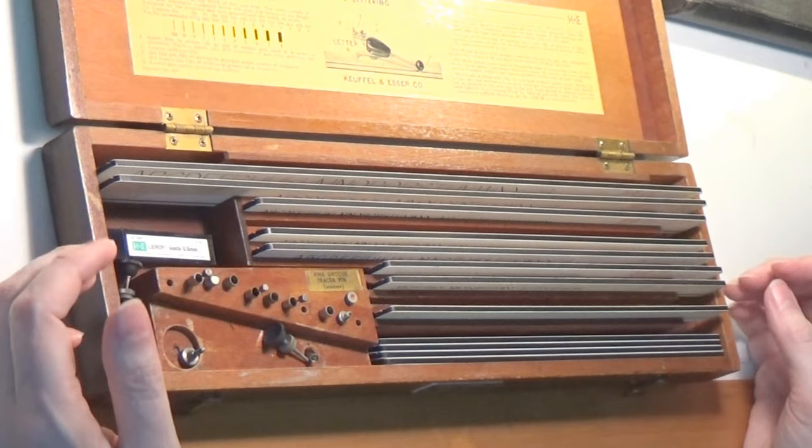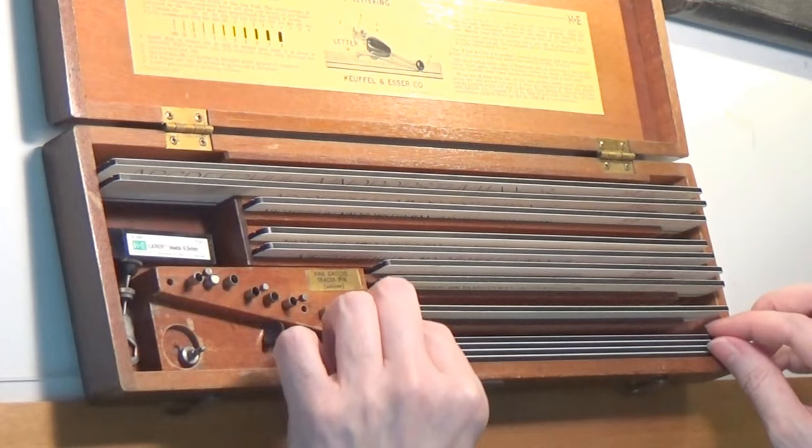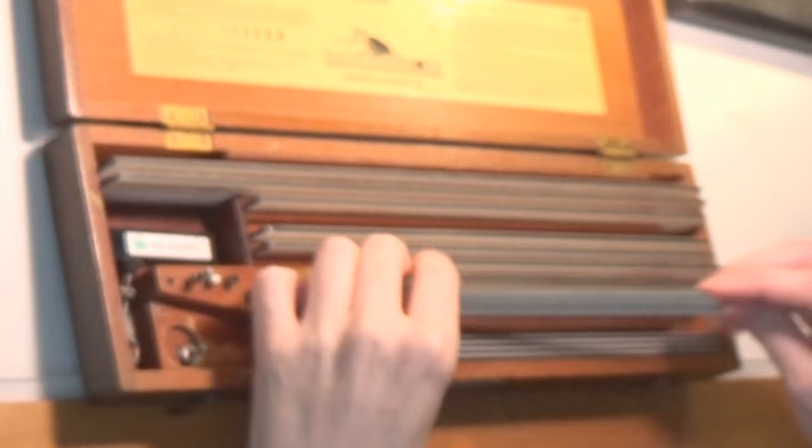First thing I'm going to notice is that there are these templates that have the characters in them. Some of them are rather large, and some of them are very small. You can see there against my finger, teeny tiny. Very tiny. So they do range in point size quite a lot.